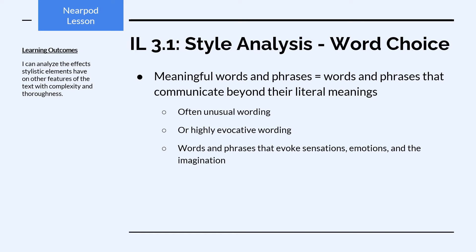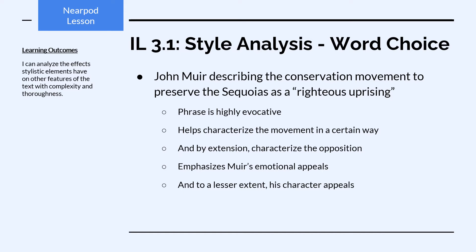Meaningful words and phrases are exactly what it sounds like — words and phrases that communicate things beyond their literal meanings. Often we look for unusual wording, ways that wording can be fresh or strange or different from what we would expect, or wording that's highly evocative of something — words and phrases that evoke sensations, emotions, and our imaginations. For instance, John Muir describing the conservation movement to preserve the Sequoias as a 'righteous uprising' is a meaningful phrase. It's highly evocative and helps characterize this movement in a very particular way, and by extension characterizes the opposition. It works to emphasize Muir's emotional appeals and, to a lesser extent, his character appeals.